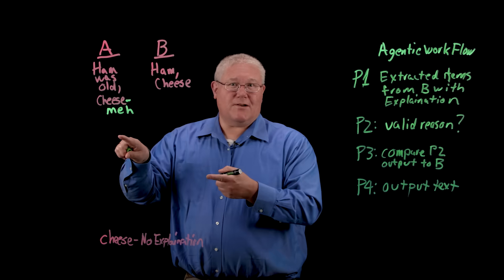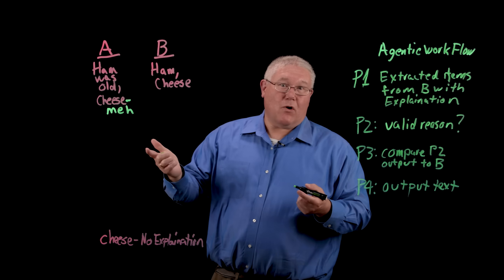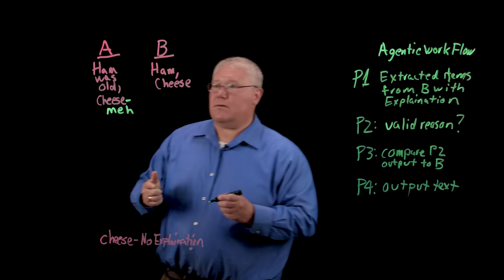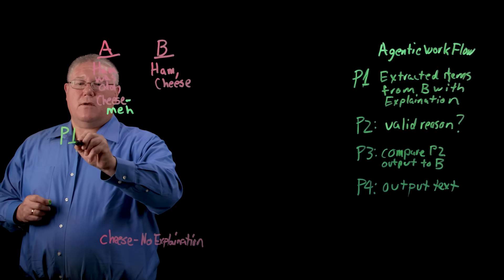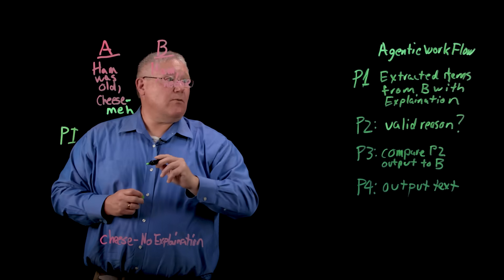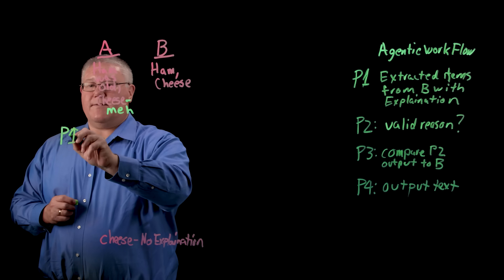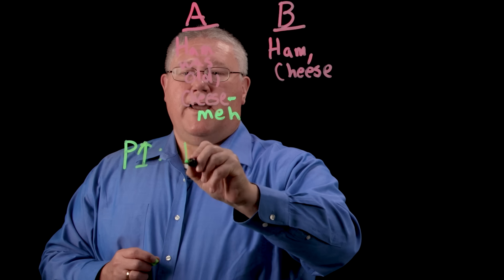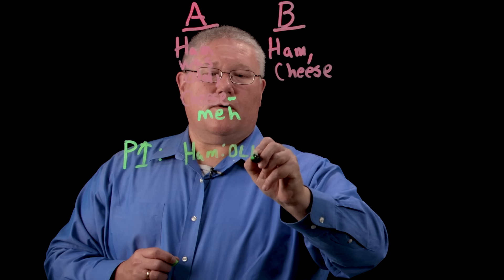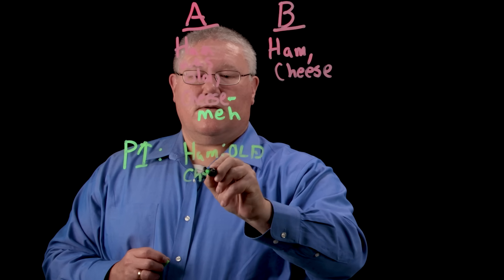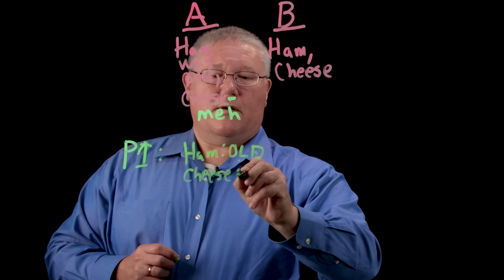So let's take this and go back to our original example to see how it would work in the workflow. So P1 here would look at this information right here and extract something like this: Ham, old, cheese, meh.